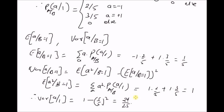Thus, given the marginal and conditional probability mass functions of two random variables A and B — that is, given P(A) and P(B|A) — we can find the conditional probability P(A|B) and also its moments. Thanks for watching.